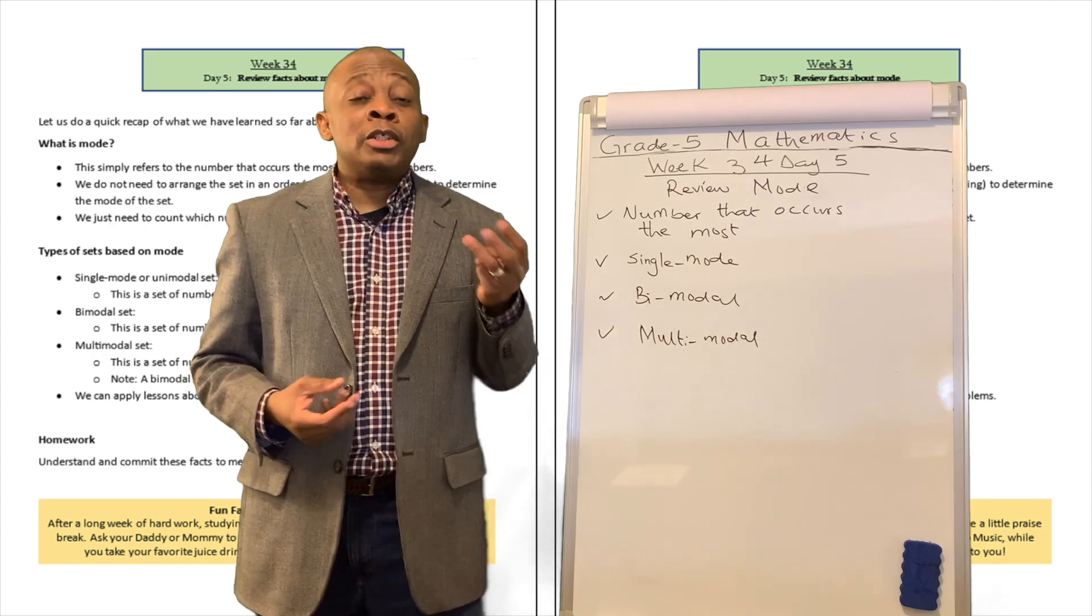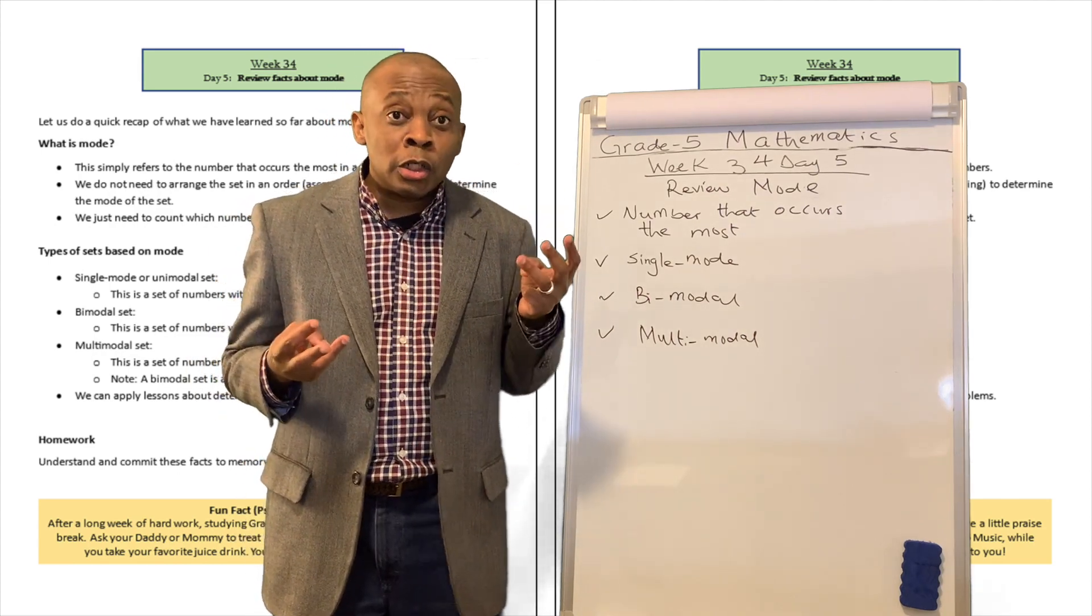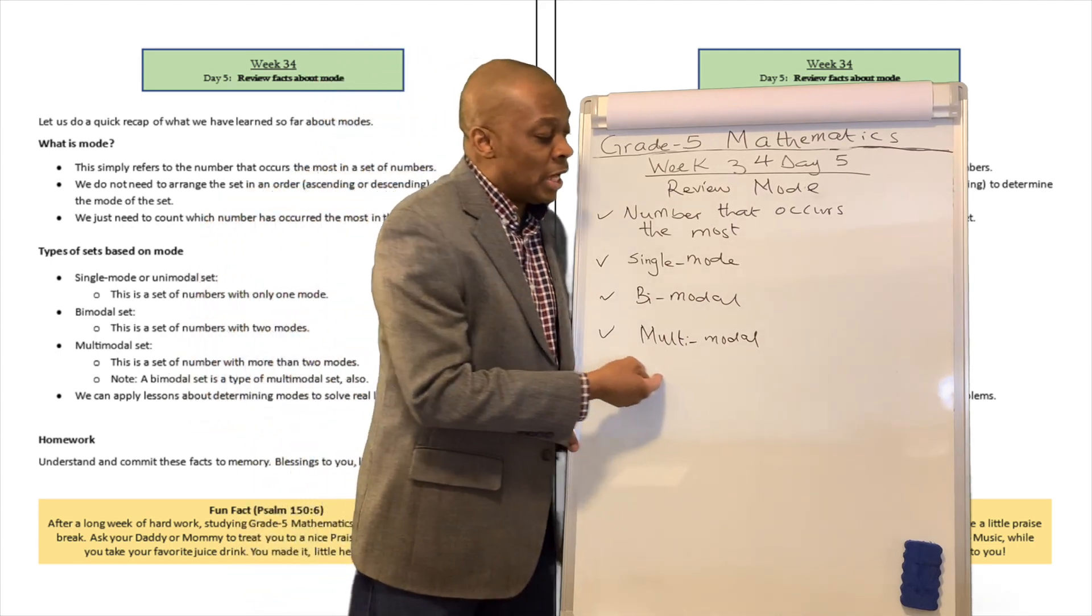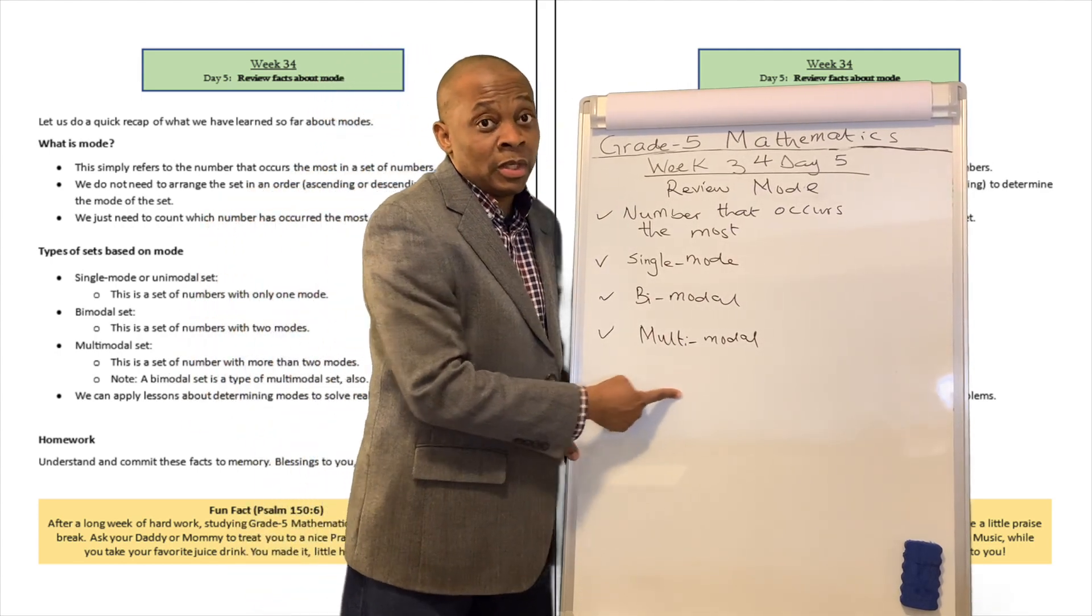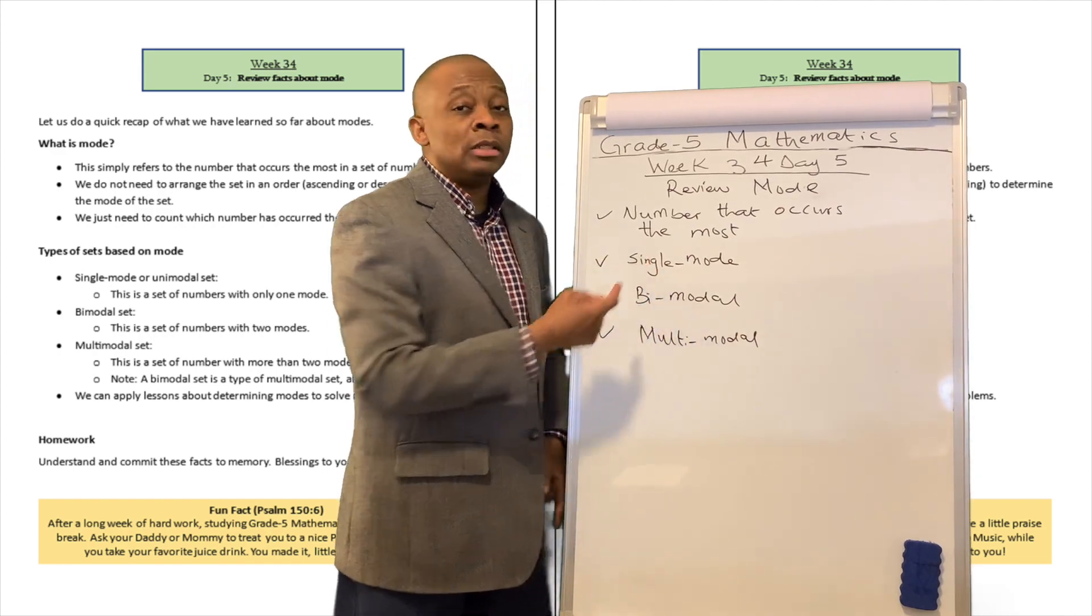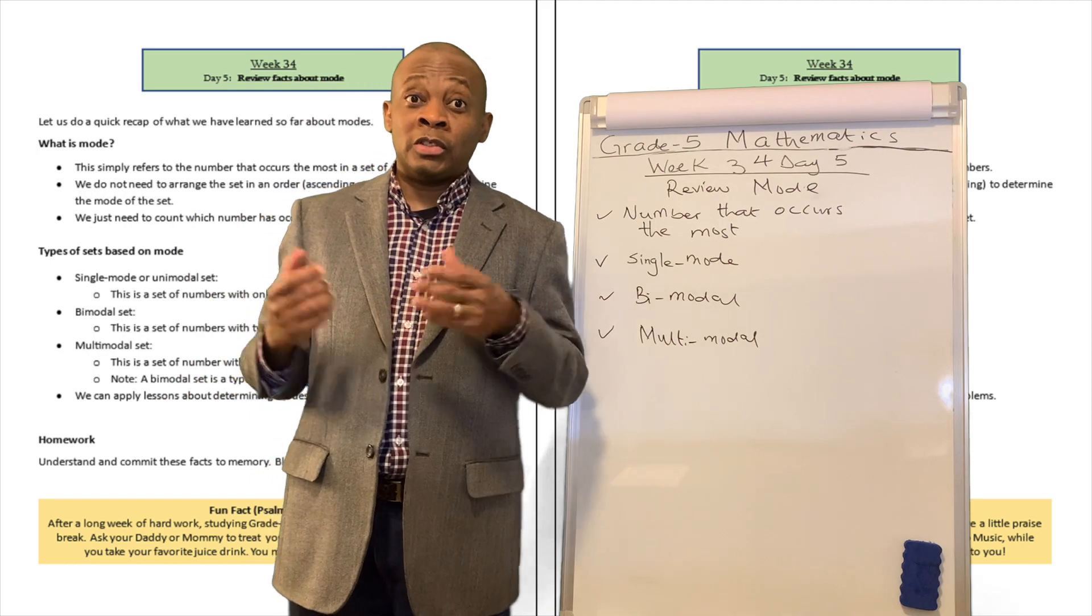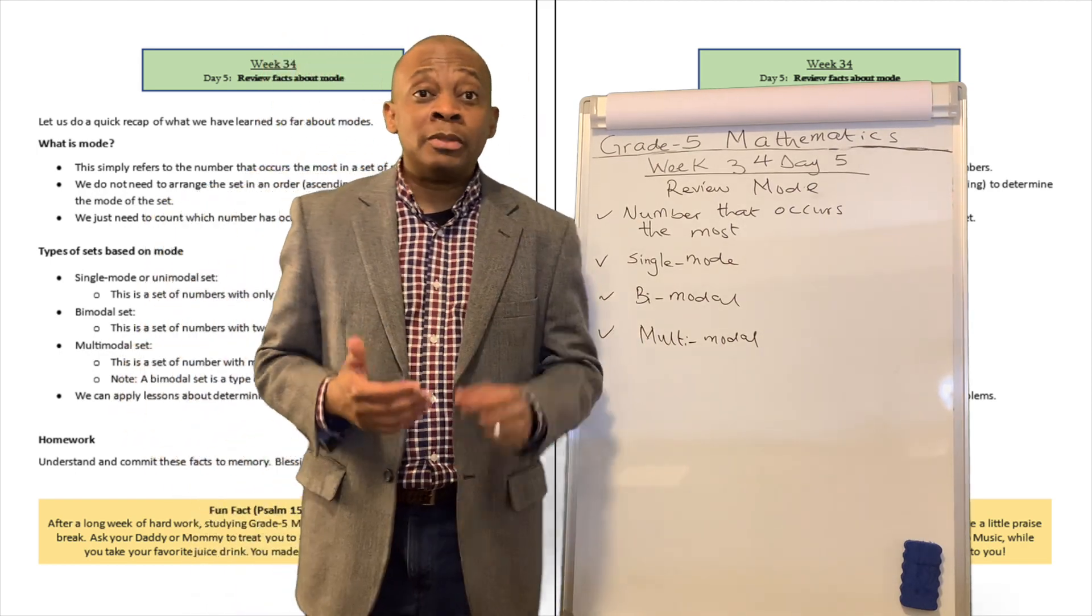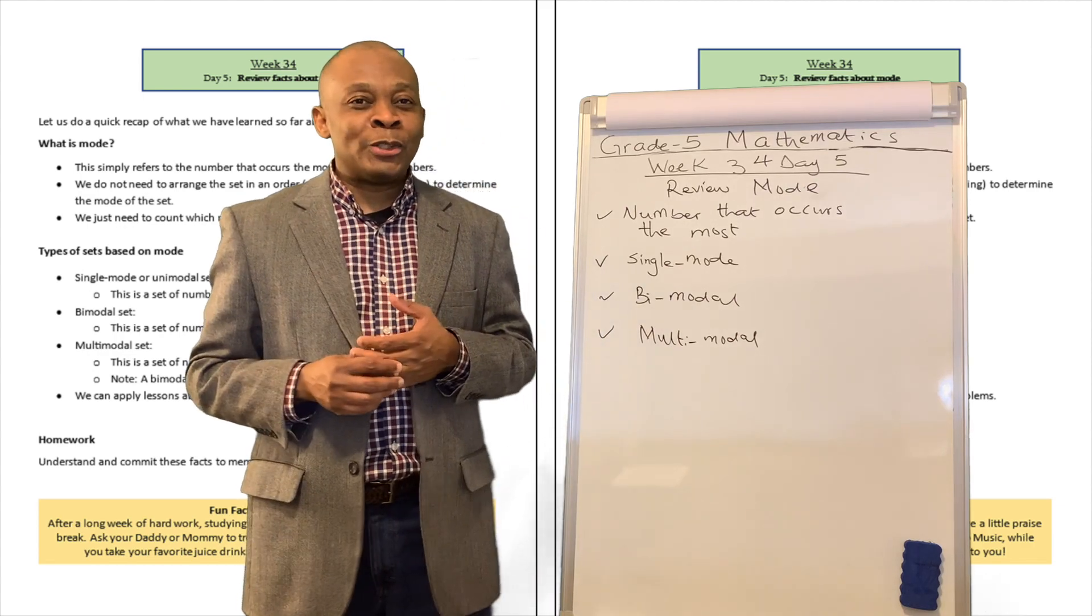If there are more than two numbers in the set that occur with the same frequency, well that's going to be multimodal sets. Okay, so multimodal set, bimodal set, and single mode set of numbers. And you know what the mode or statistical mode is, which may be applied to solve problems in real life situations.